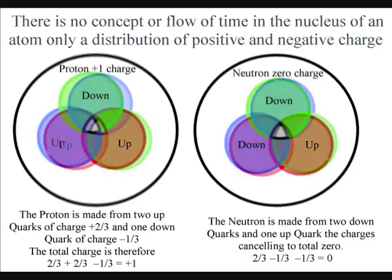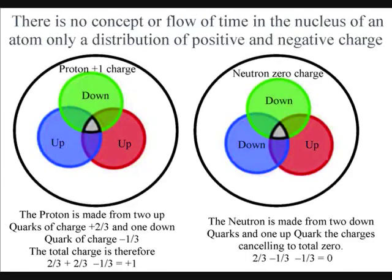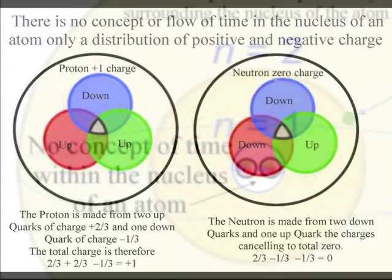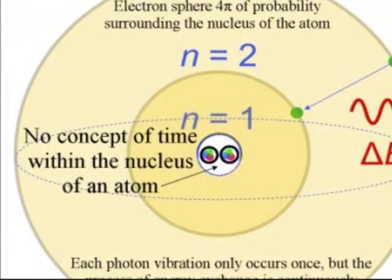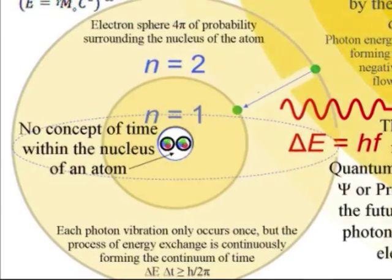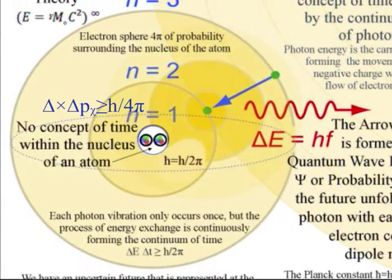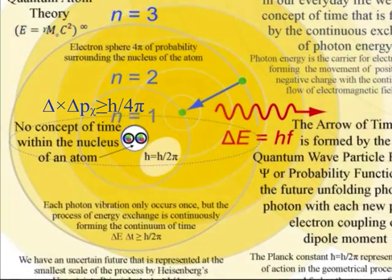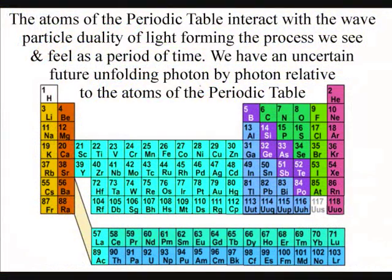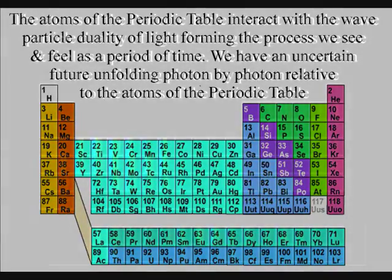In our everyday life we have the continuous movement of positive and negative charge as part of an interactive process. We can see that the atoms interact with the electromagnetic spectrum because we see spectral lines relative to the atoms.